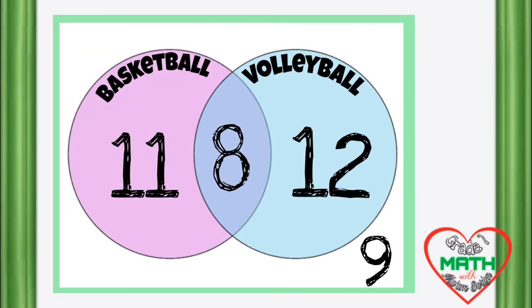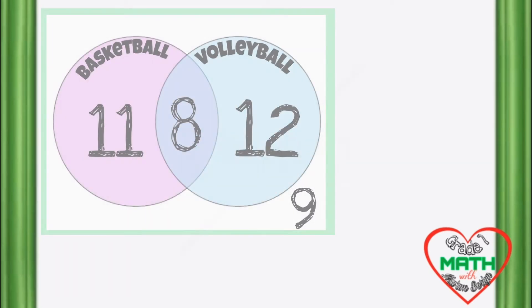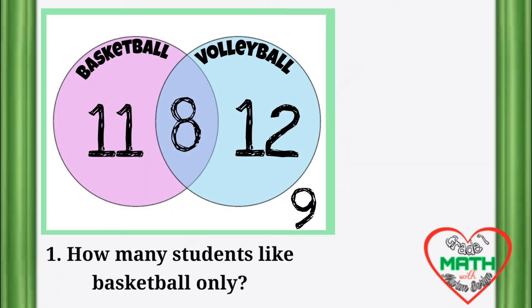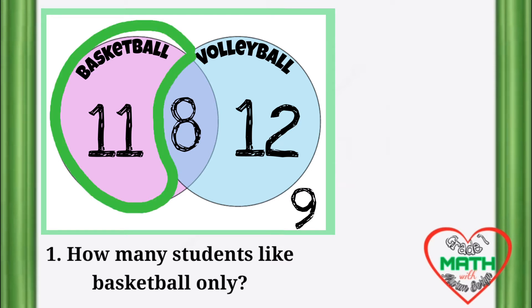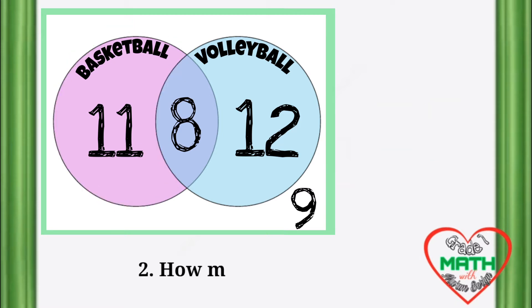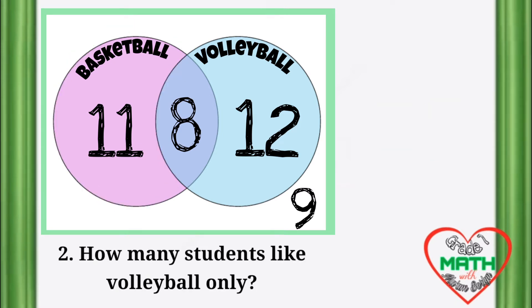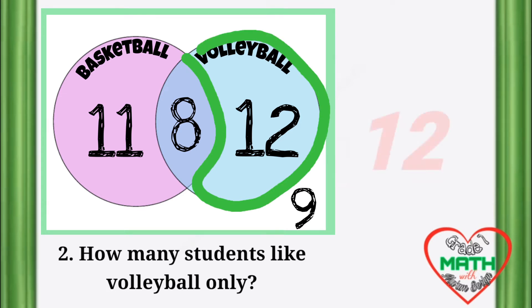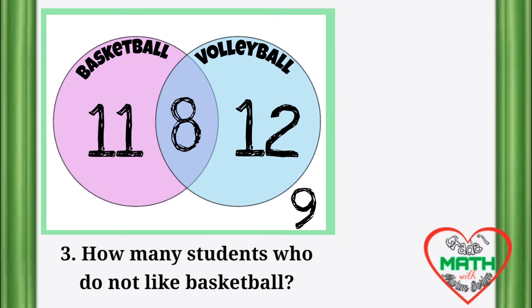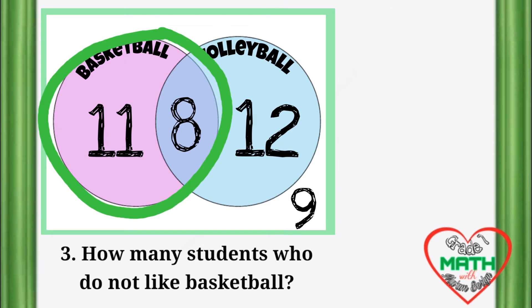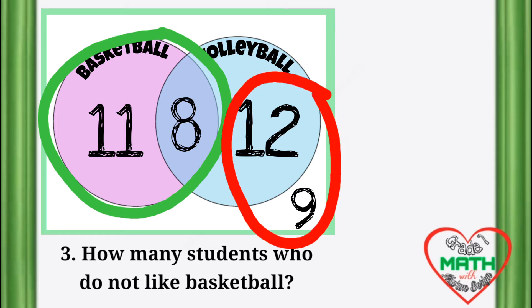Now let us have another example. We will answer questions based on this Venn diagram. Based on the diagram, there are only 11 students who like basketball only. For number 2, how many students like volleyball only? There are 12 students who like volleyball only. For number 3, how many students do not like basketball? The number of students who do not like basketball are the numbers outside the basketball circle — there are 21 students who do not like basketball.